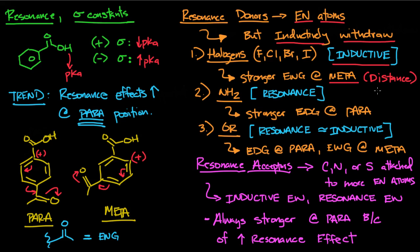Overall, halogens are electron-withdrawing groups and are better at the meta position. Keep in mind that with distance, the inductive effect becomes stronger while resonance donation becomes weaker at the meta position. So overall you get a stronger electron-withdrawing effect at the meta position. For NH₂, the more important effect is resonance donation, so overall NH₂ is an electron-donating group, and it's a stronger electron-donating group at the para position.